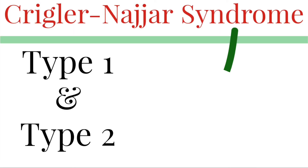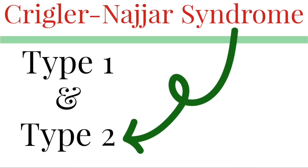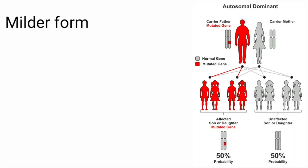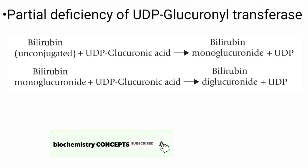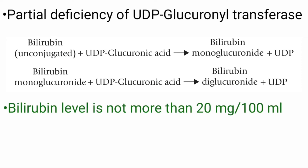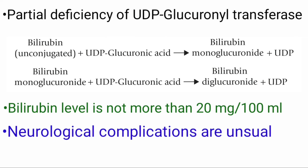Coming to type 2 Crigler-Najjar syndrome, it is a milder form and it is inherited as an autosomal dominant condition. Patients with type 2 disease have partial deficiency of UDP-glucuronosyltransferase, so some amount of enzyme activity is seen. Bilirubin level in the blood does not exceed 20 milligrams per deciliter and the patients survive without any neurological complications.